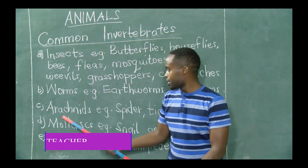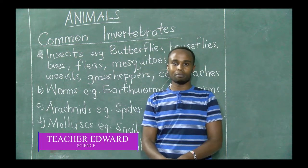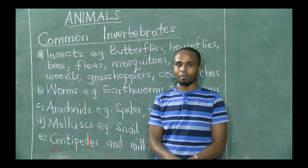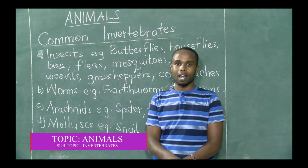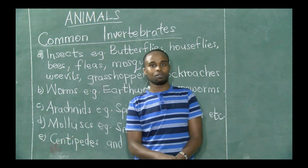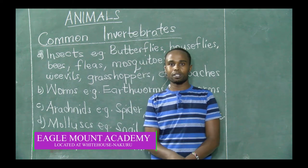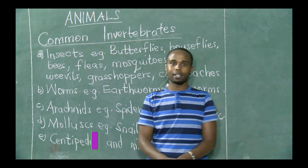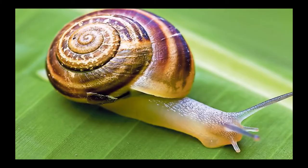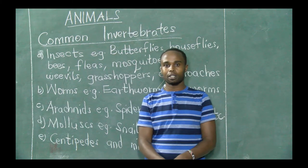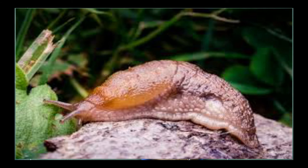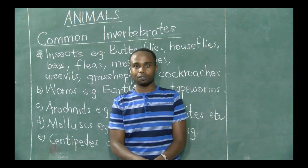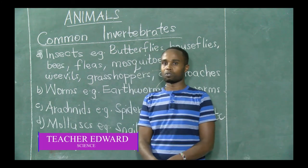Number four: another group of invertebrates is called mollusks. These are animals with soft bodies. Two good examples of mollusks are a snail and a slug. A snail has a shell, whereas a slug does not have a shell. They are almost similar, but that is one difference. Those are two good examples of mollusks — animals with soft bodies.